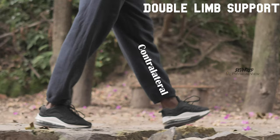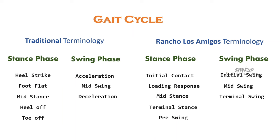There are subdivisions of the gait cycle with two terminologies used in classification. One is the traditional terminology and the second is the Rancho Los Amigos terminology. In traditional terminology, the stance phase includes heel strike, foot flat, mid stance, heel off, and toe off.